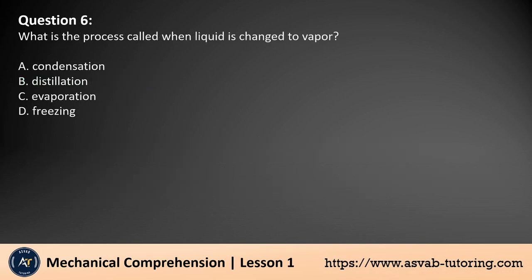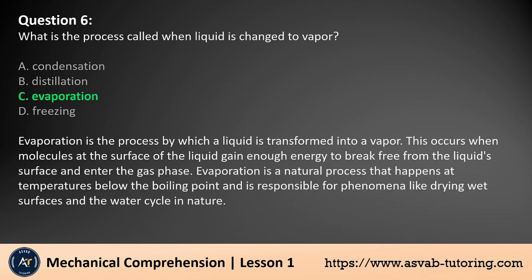Question 6. What is the process called when liquid is changed to vapor? A. Condensation, B. Distillation, C. Evaporation, D. Freezing. The answer is C. Evaporation is the process by which a liquid is transformed into a vapor. This occurs when molecules at the surface of the liquid gain enough energy to break free from the liquid's surface and enter the gas phase. Evaporation is a natural process that happens at temperatures below the boiling point and is responsible for phenomena like drying wet surfaces and the water cycle in nature.